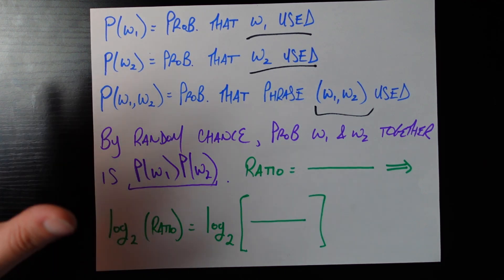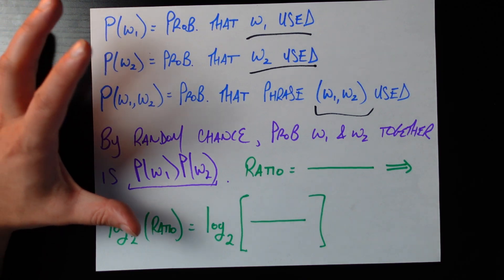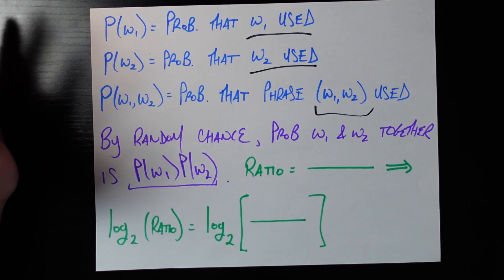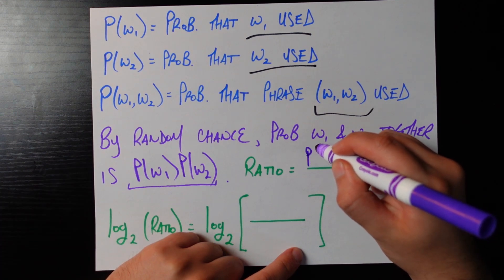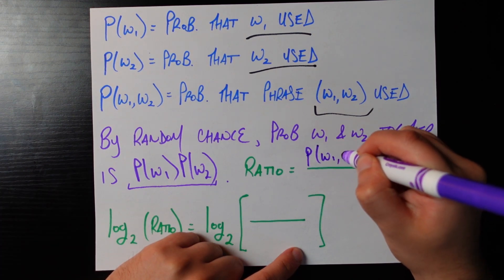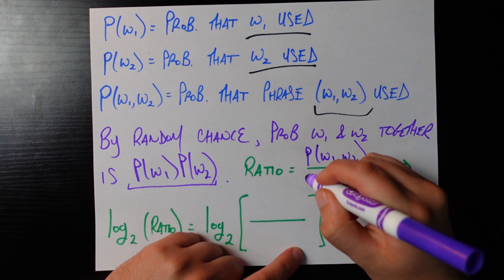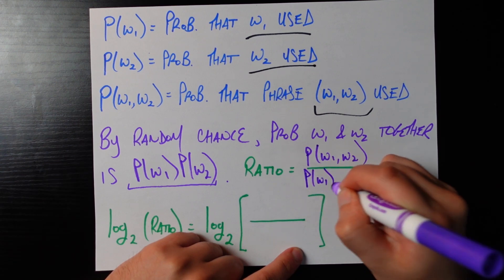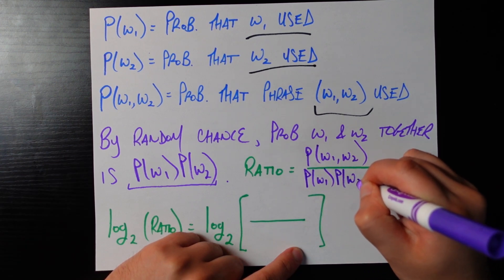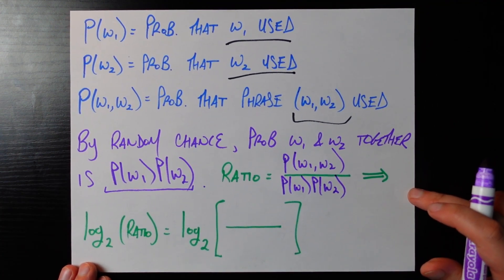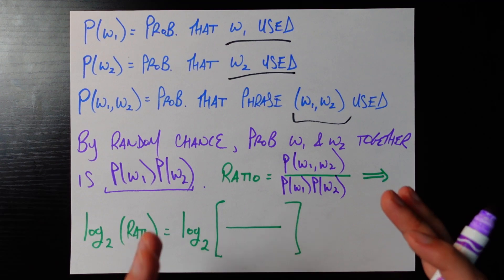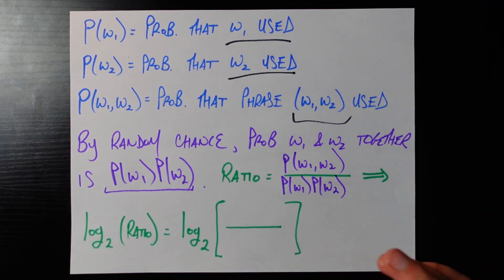So now we can use all these symbols we have on the page to construct a very logical ratio and that ratio is going to be the numerator is going to be p of w1 comma w2 and the denominator is going to be p of w1 times p of w2. So now we're going to pause one more time this video and just make sense make sure we understand what this ratio is and what high values or low values imply.